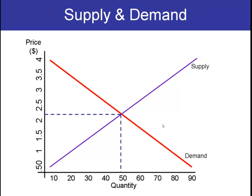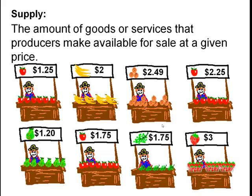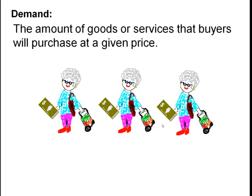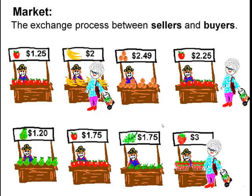In a market economy, price is often impacted by supply and demand. Let's take a look at some definitions we'll be using. Supply is the amount of goods or services that producers make available for sale at a given price. Demand is the amount of goods or services that buyers will purchase at a given price. The market is the exchange process between sellers and buyers.